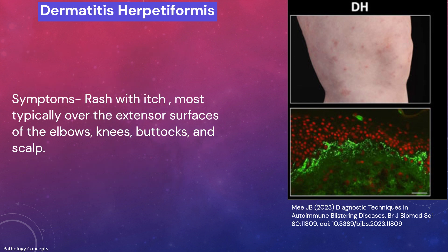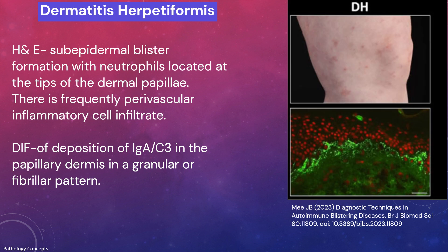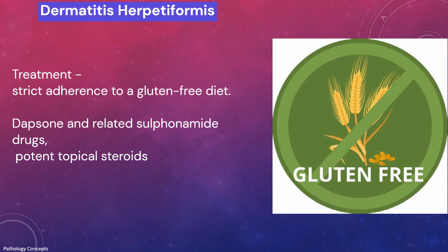Symptoms include rash with itch most typically over the extensor surfaces of elbows, knees, buttocks, and scalp; grouped erythematous plaques and vesicles can be seen on extensor sites. On H&E there is a sub-epidermal blister formation with neutrophils located at the tips of dermal papillae and frequent perivascular inflammatory infiltrate. On DIF there is a deposition of IgA or C3 in the papillary dermis in a granular or fibrillar pattern. Treatment includes strict adherence to a gluten-free diet; medical management includes dapsone and related sulfonamide drugs, and potent topical steroids.